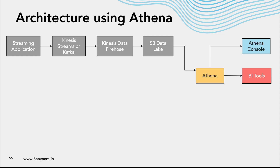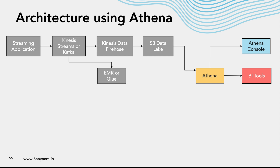We can use either the Athena console or BI tools to do analytics on top of the data coming from the streaming application. The data flows via Kinesis Streams or Kafka, into Kinesis Data Firehose, then into the S3 data lake, and Athena is used there. However, this use case might not be that prevalent because with a streaming use case you might need to do some processing.